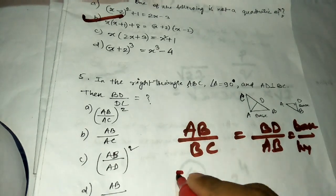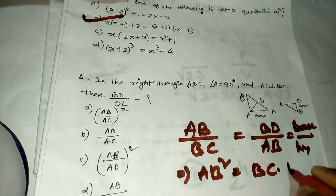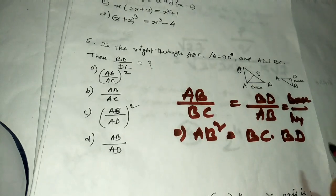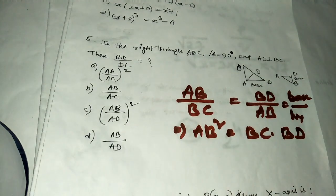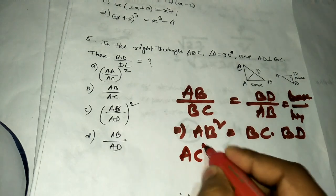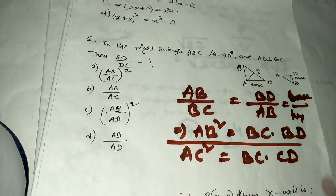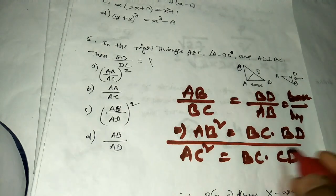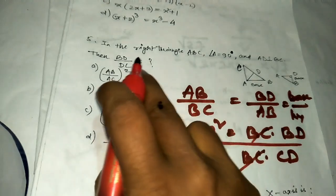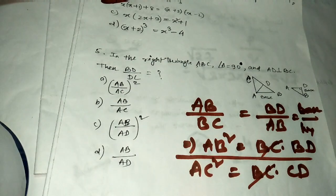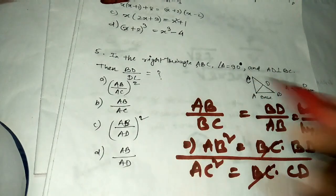From the similarity, AB² = BC × BD. Similarly, taking the bigger triangle and the upper similar triangle gives AC² = BC × CD. Dividing equation one by equation two, BC cancels, giving BD/CD = AB²/AC². So BD/DC equals (AB/AC)².